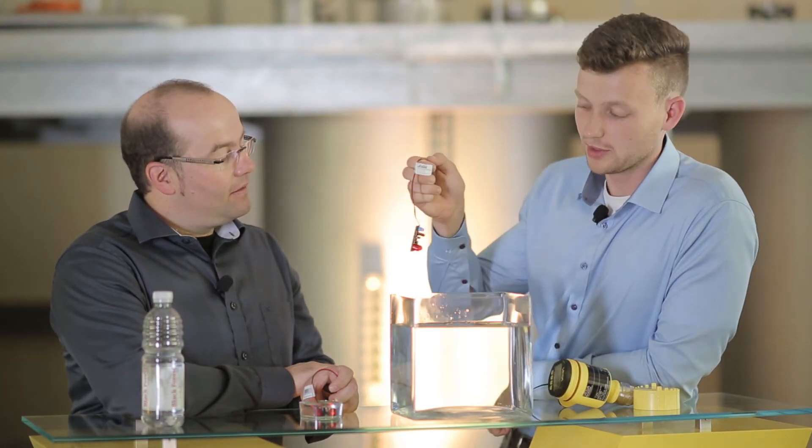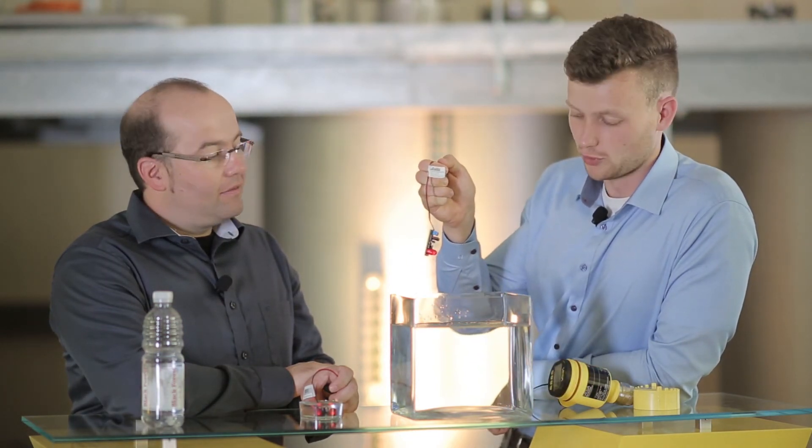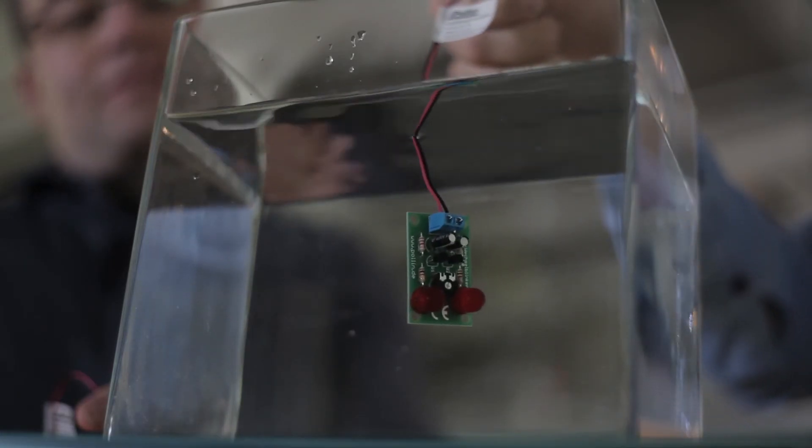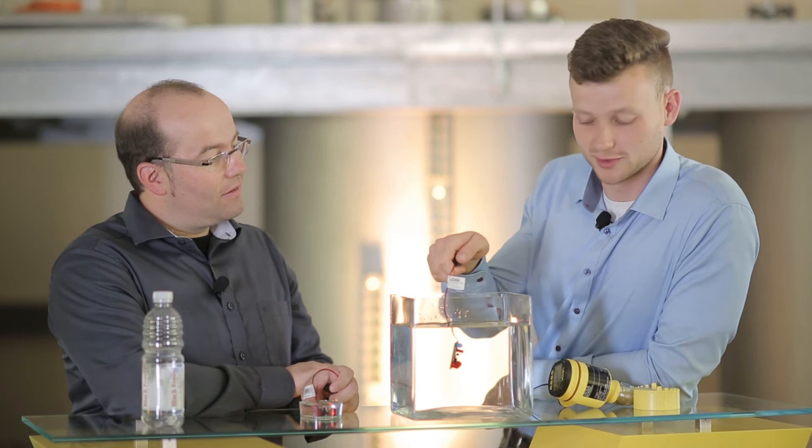So now we'll take a look at a practical example. I have here an alternating blinker that is not potted and will now hold it in the water. As you can see, nothing works anymore. The part is broken.